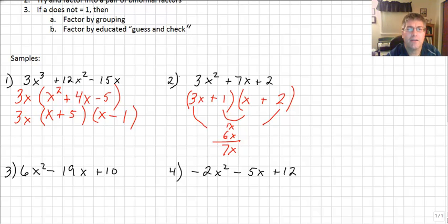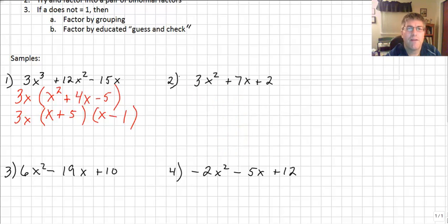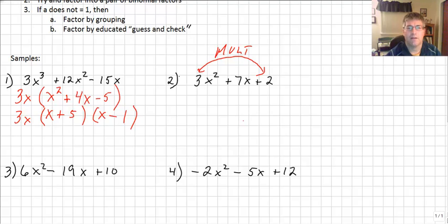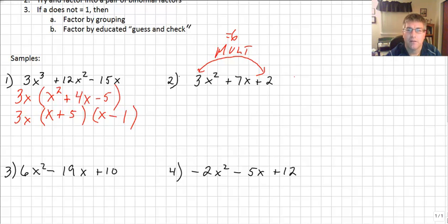Now I'm going to redo this one and factor it by grouping. When we factor by grouping, we take our leading coefficient 3 and our constant 2 and multiply them together. 3 times 2 is 6. So now we ask ourselves: we need factors of 6 that add up to 7, which is our middle term.